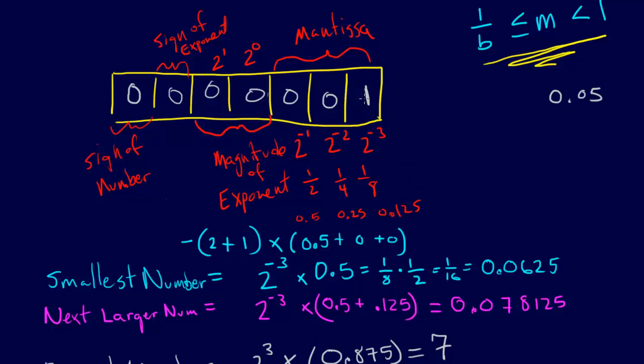That's not as close to 0.05 as we can get as we've shown before. And so what we do, the process of normalization is you increase the magnitude of the mantissa by 1. That means that we have a 0 here, and we have a 1 here.